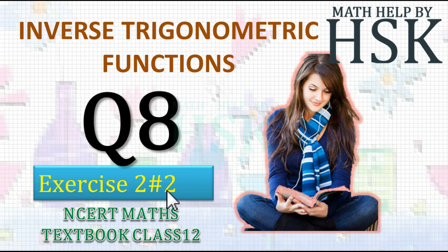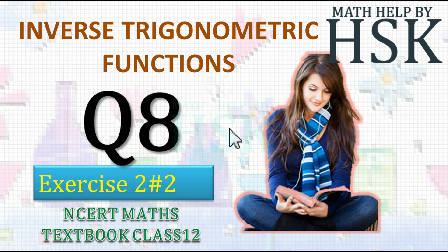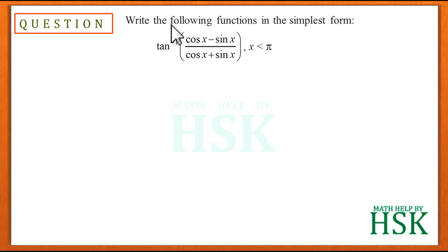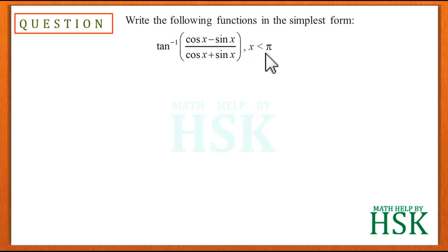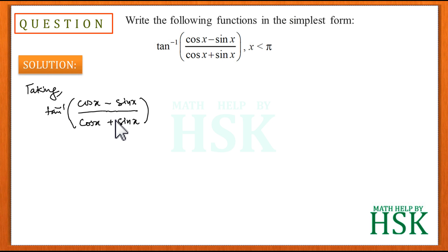Taking question number 8 of exercise 2.2 on inverse trigonometric functions. The question asks us to write in the simplest form: tan inverse of (cos x minus sin x) upon (cos x plus sin x), where x is less than pi. To solve this, the key trick is that we divide the numerator and denominator by cos x.